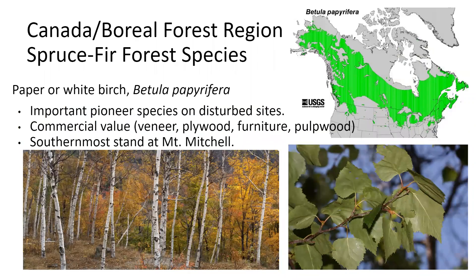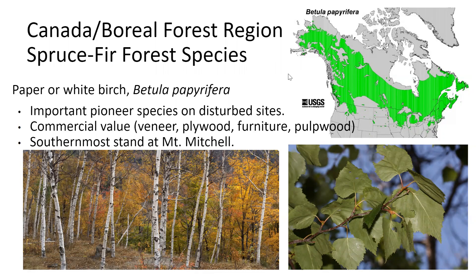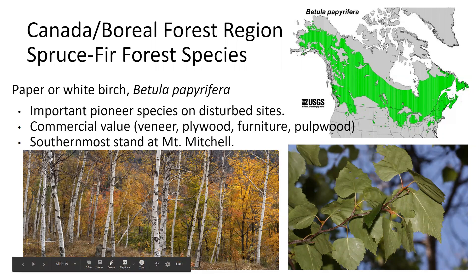The early successional species is paper birch, or white birch, Betula papyrifera — an important pioneer species. You can see it regenerated at the edge of this forest. It has some commercial value in veneer, plywood, furniture, and pulpwood. Although not shown on the map, it does extend into the Southern Appalachians — there's a small stand at Mount Mitchell. If you look at the leaves, they might look a bit like river birch, but the leaf base instead of being cuneate or wedge-shaped is either truncate or slightly heart-shaped. Of course, the bright white bark is a real giveaway.